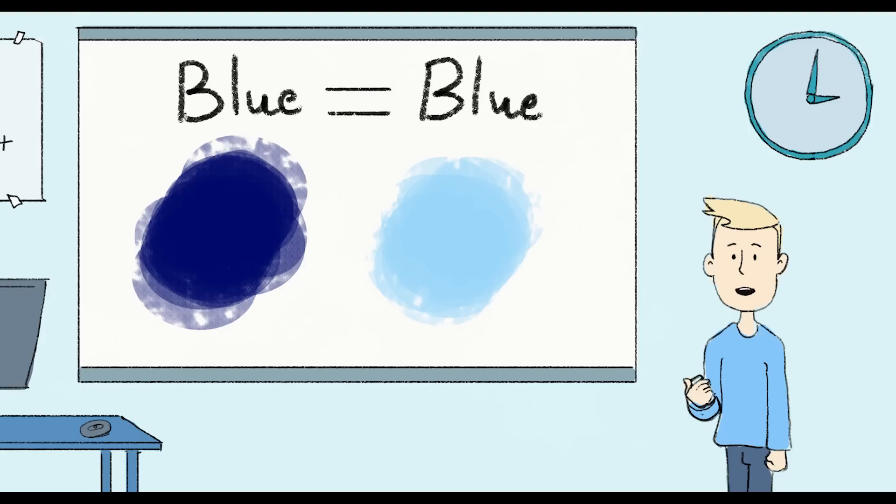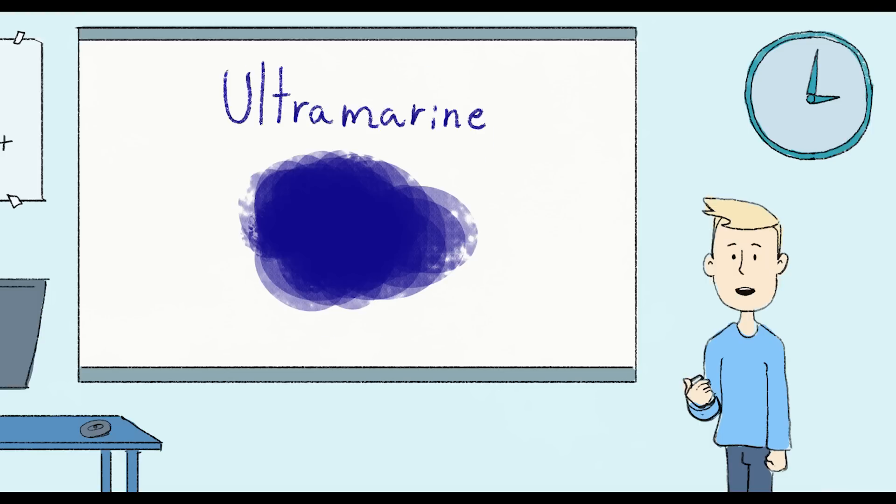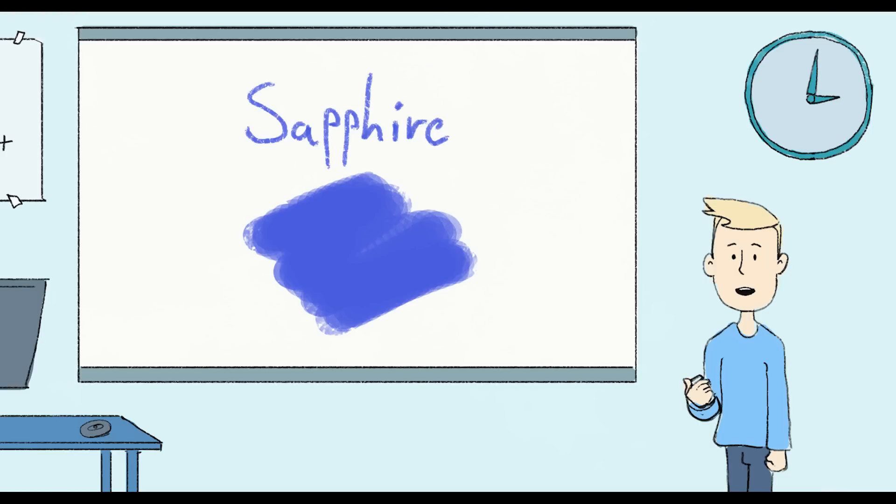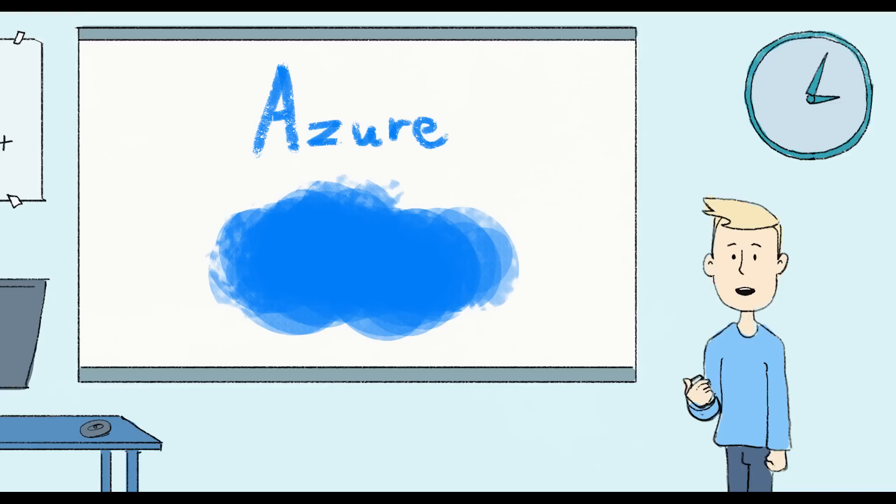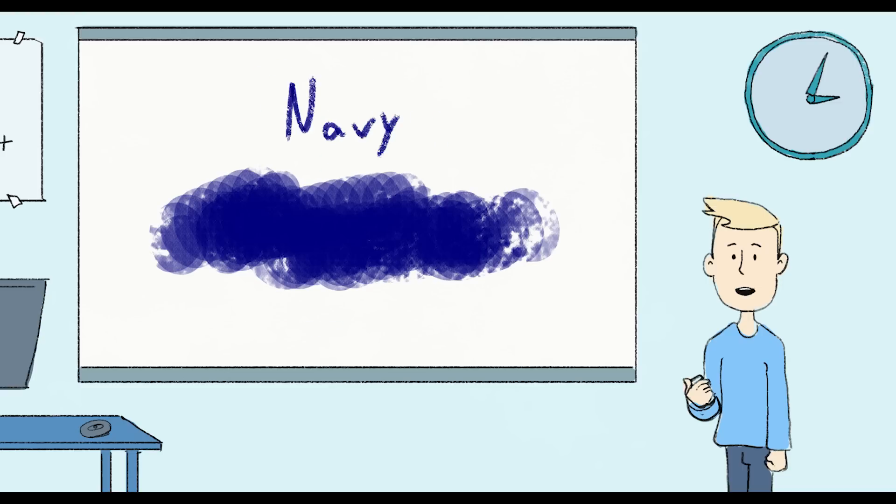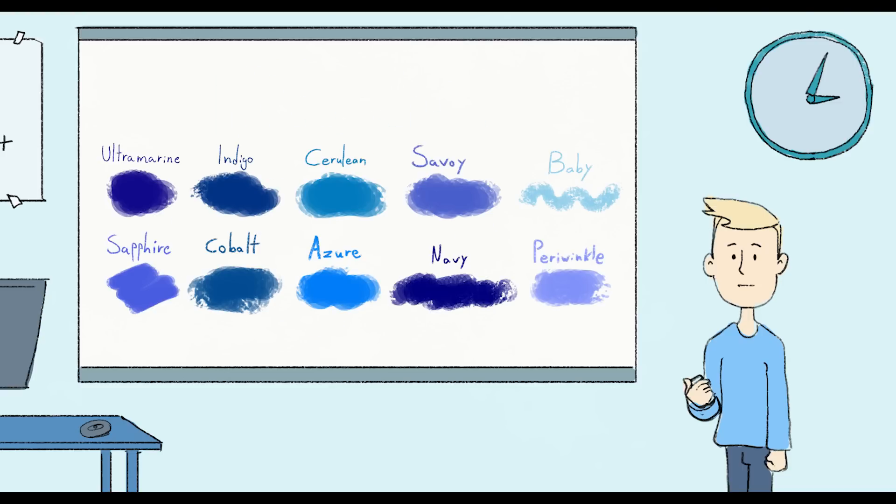But light blue and dark blue are both blue. They could see other colors, but could not mentally perceive colors like ultramarine, sapphire, indigo, cobalt, cerulean, azure, savoy, navy, baby, and periwinkle. They could see the colors, but could not differentiate them. To most people, they were all blue.